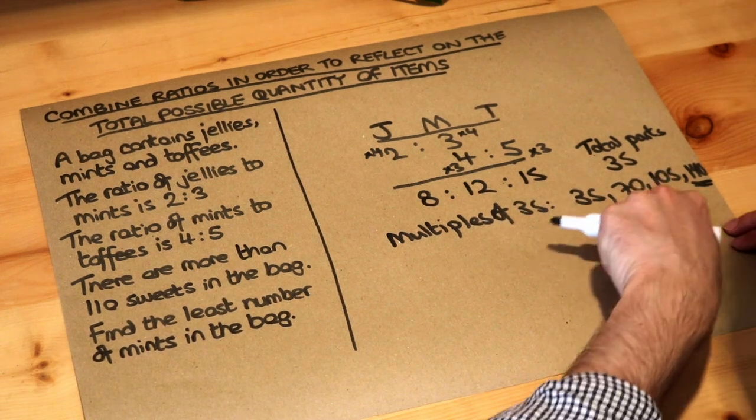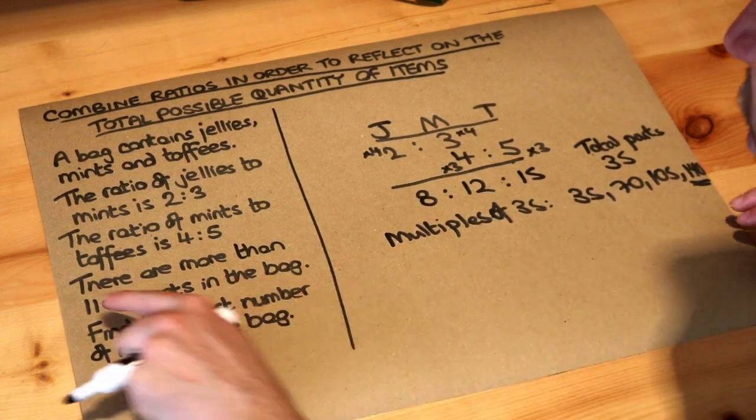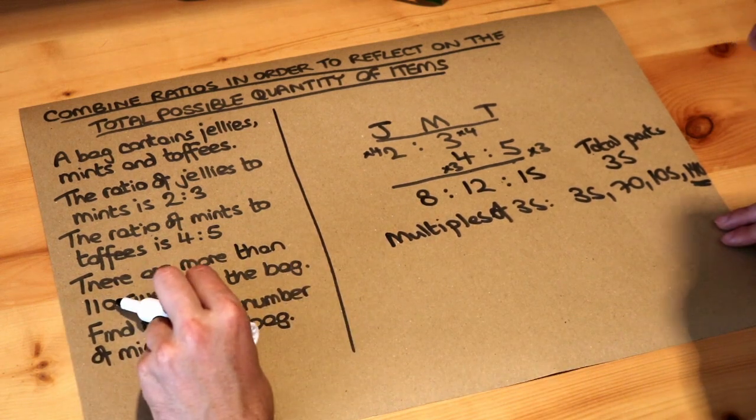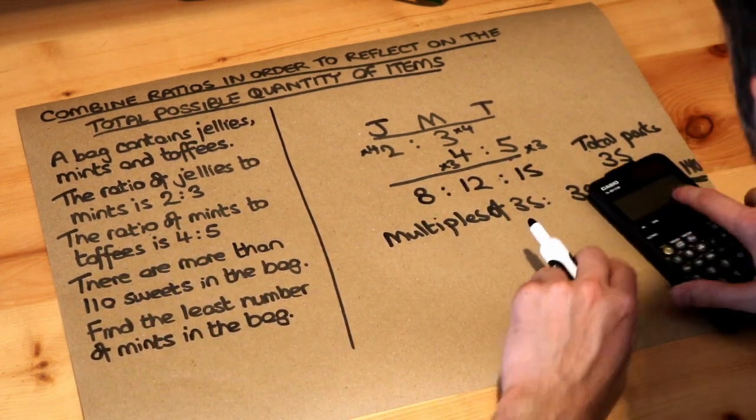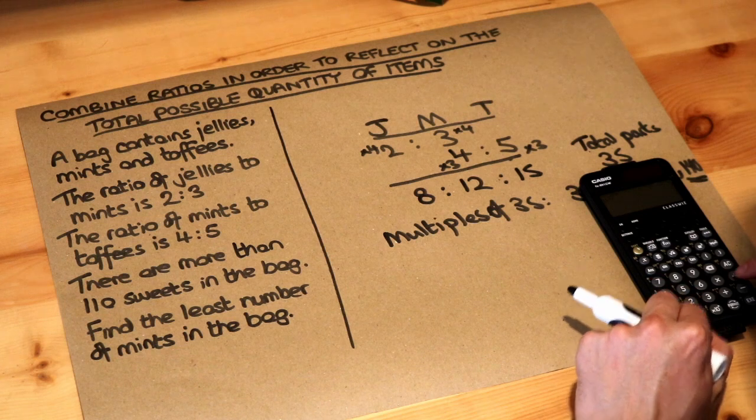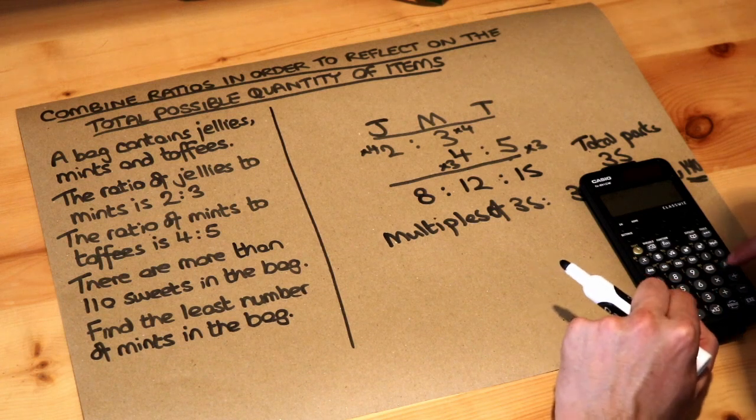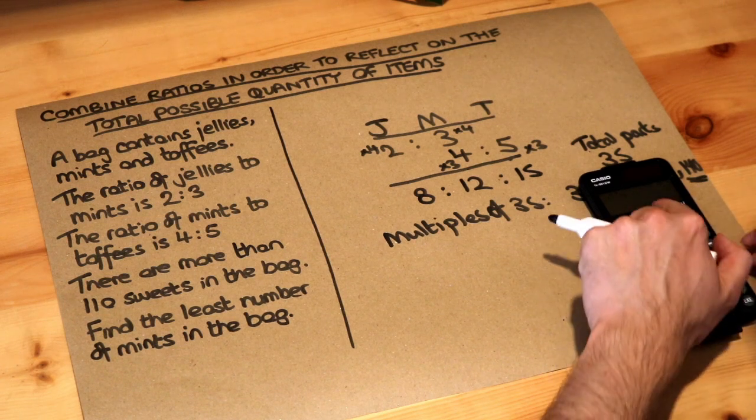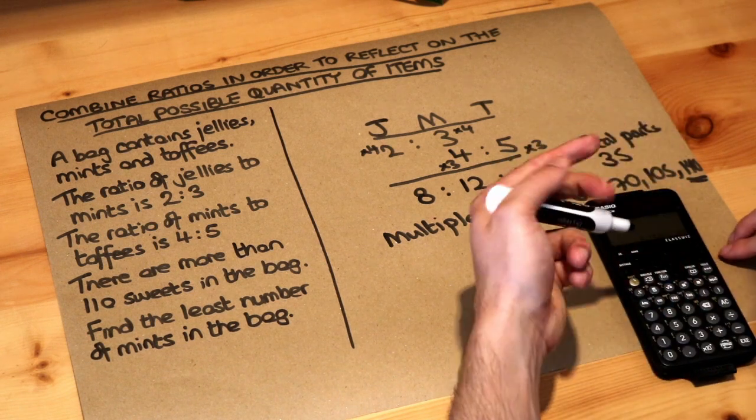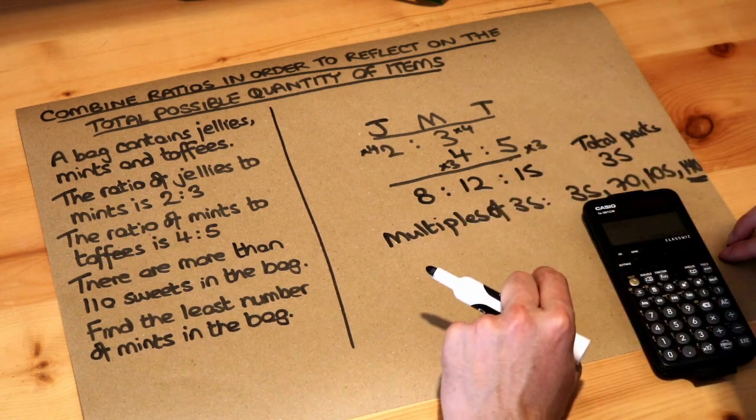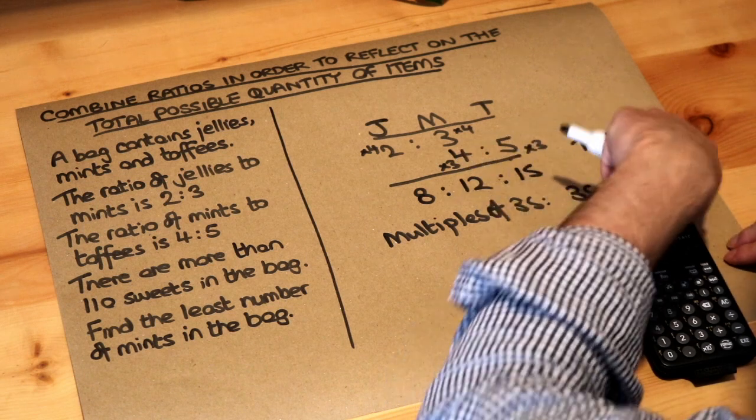If you want to do it in one go without writing out multiples you can just divide 110 by 35. So if I do that on my calculator, 110 divided by 35 is 3.14. So we have to round that up so it would be four lots of 35 which would be 140.